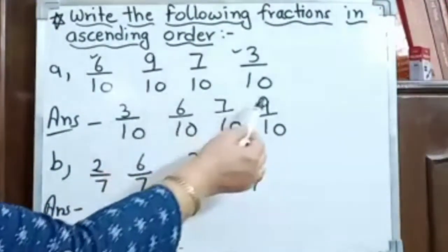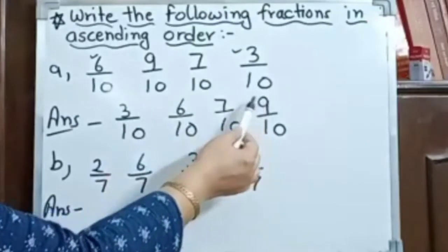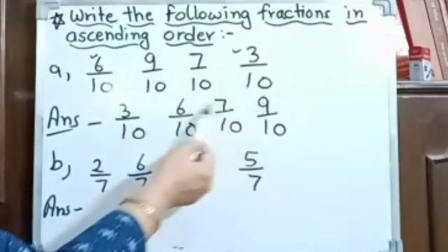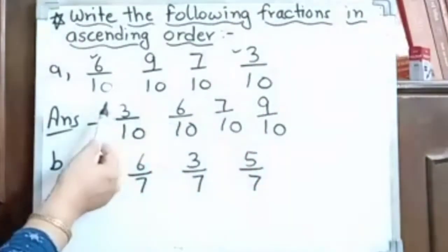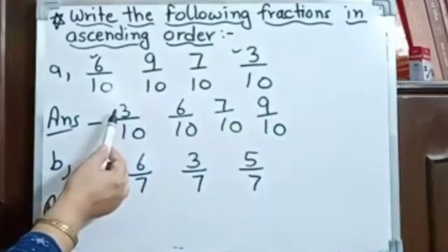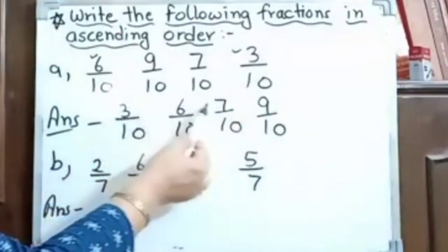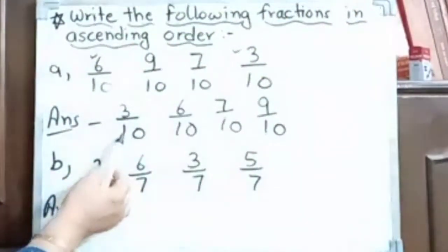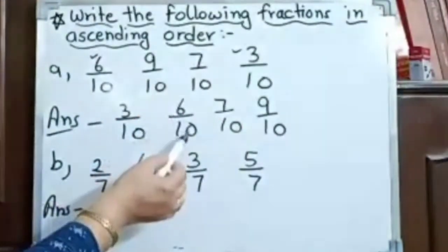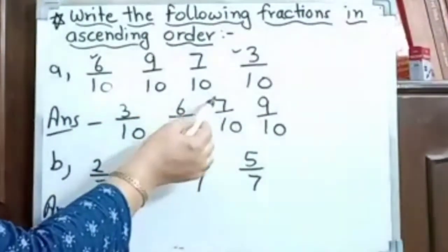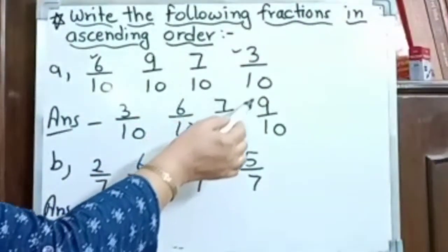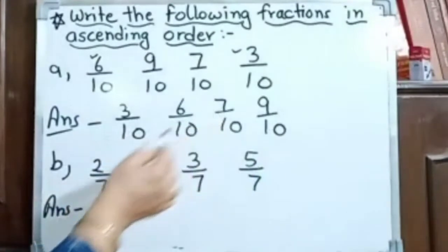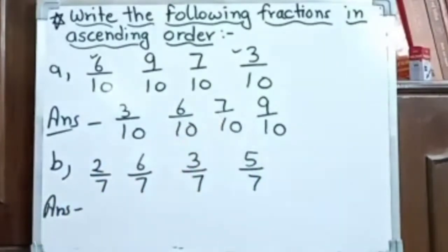From this ascending order we can also get descending: 9, 7, 6, 3 — bigger to smaller. Ascending order is 3, 6, 7, 9. So ascending order fractions are: 3 by 10, 6 by 10, 7 upon 10, 9 upon 10.